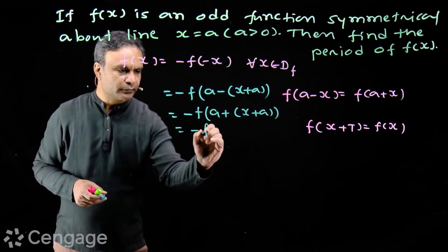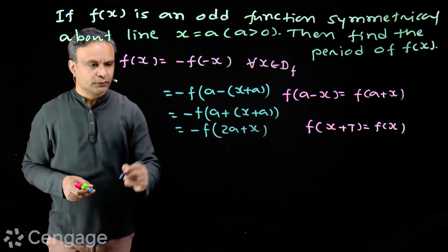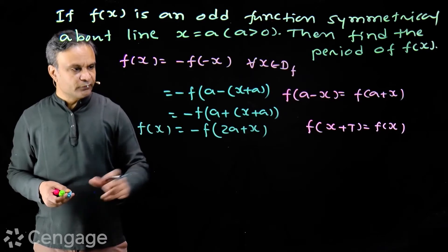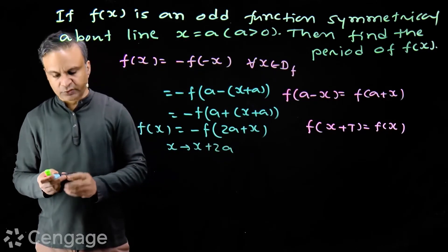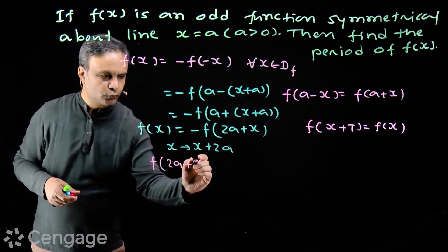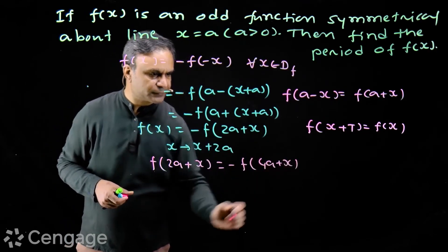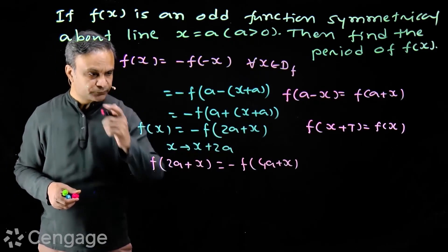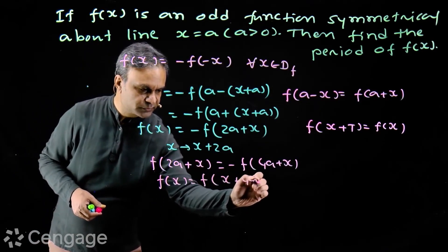We have -f(2a+x). So we have f(x) = -f(2a+x). Now it's simple. We replace here x by x+2a. So we will have f(2a+x) = -f(4a+x). Put the value of f(2a+x) in this equation. We get f(x) = f(x+4a).